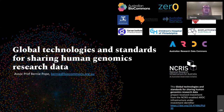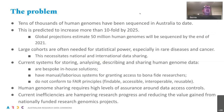There are many partners in this project. The problem we are solving is that there are tens of thousands of human genomes that have been sequenced in Australia to date, and this is predicted to grow rapidly — tenfold by the year 2025. Global projections estimate 50 million human genomes will be sequenced by the end of this year.